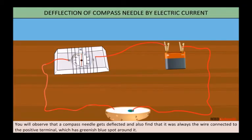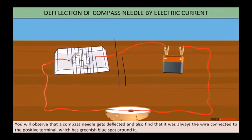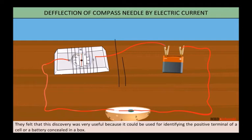You will observe that the compass needle gets deflected and also find that it was always the wire connected to the positive terminal which has a greenish-blue spot around it. They felt that the discovery was very useful because it could be used for identifying the positive terminal of a cell or a battery concealed in a box.